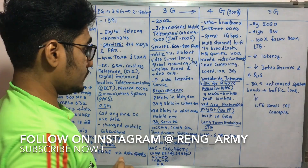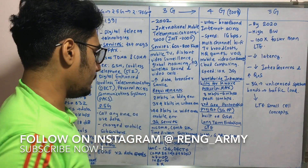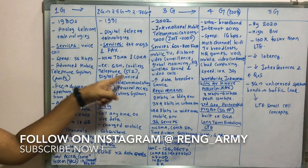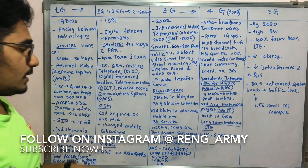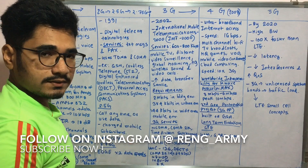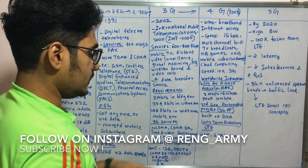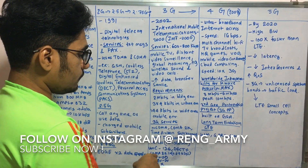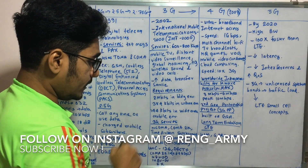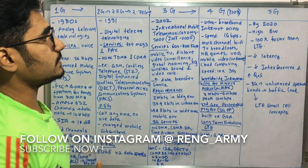3G technologies include W-CDMA, CDMA2000, TD-SCDMA (Time Division Synchronous Code Division Multiple Access), UWC-136, and an advanced version of DECT. CDMA2000 is divided into sub-standards: 1X (base), 1X EV-DO (Evolution Data Optimized), 1X EV-DV (Evolution Data Voice), and CDMA2000 3X. All these technologies fall under the 3G system.